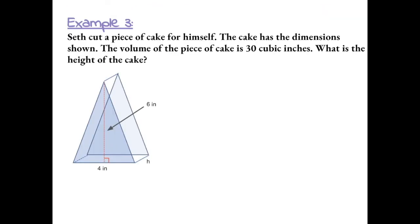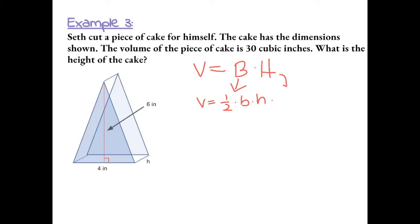Example 3: Seth cut a piece of cake for himself. The cake has the dimensions shown, and the volume of the piece of cake is 30 cubic inches. What is the height of the cake? The formula for volume of a triangular prism is B times H, where B is the area of a triangle — one-half times the base times the height of the triangle — times the height of the prism.